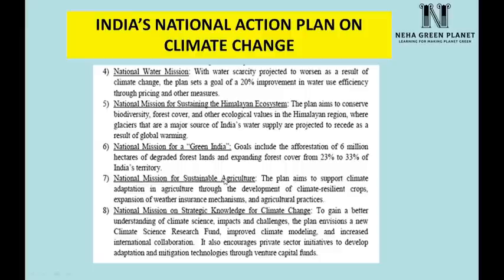The seventh mission is the National Mission for Sustainable Agriculture, addressing climate change impacts on agriculture through development of climate-resilient crops, expansion of weather insurance mechanisms for farmers who lose crops to harsh climatic conditions, and promotion of best agricultural practices. The eighth mission is the National Mission on Strategic Knowledge for Climate Change, developing the knowledge base through research funding, more laboratories, international collaboration, and private sector partnerships. This completes the topic of international agreements; the next video will cover environmental legislation in India.